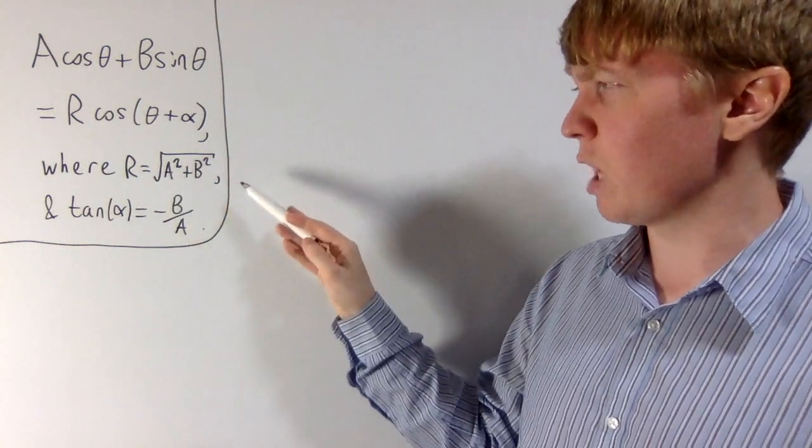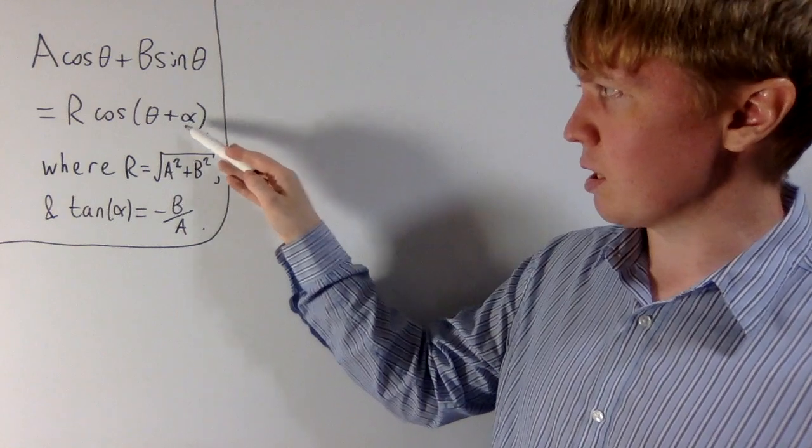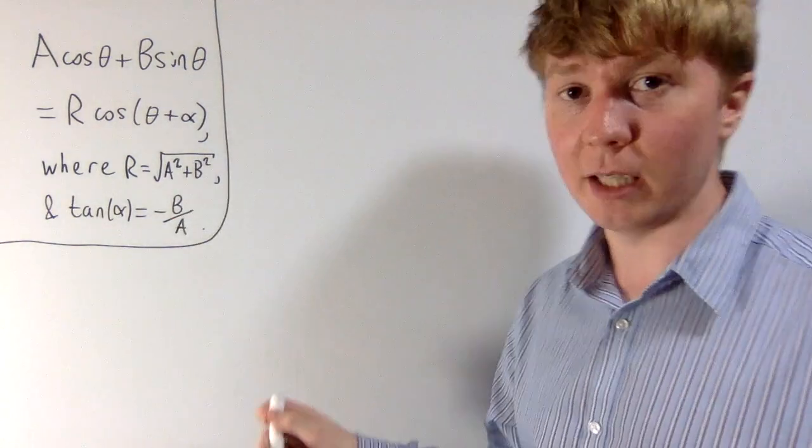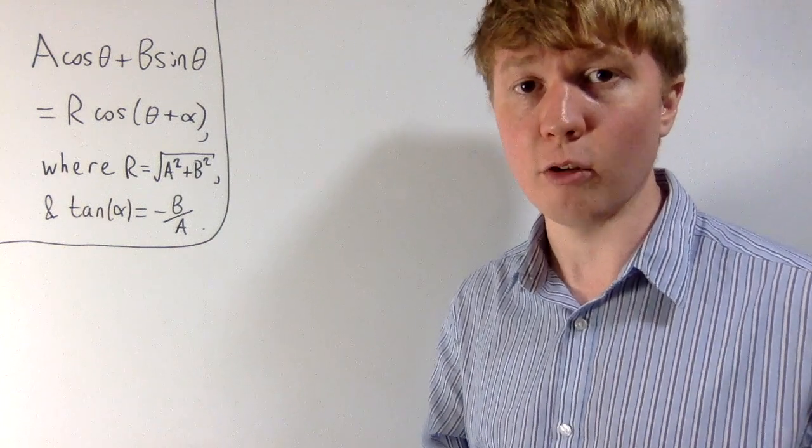R needs to be the square root of A squared plus B squared, and we need to choose this extra constant alpha so that tan of alpha is equal to minus B over A. This is called the harmonic addition theorem.